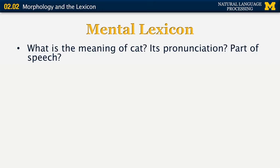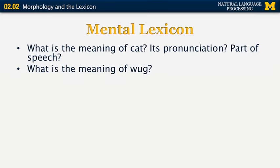If you store a word like cat, you will know that this is a little furry creature that says meow. You know that it's pronounced 'cat' and you know that it's a noun. Sometimes you may not know all of this information and yet still be able to store it in the mental lexicon.